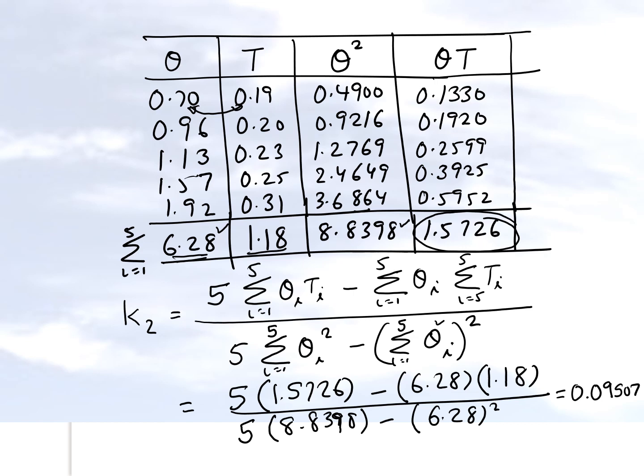Let's go and see what we get for the value of k1. So k1 is nothing but T bar minus k2 theta bar. So T bar will be the average value of all the T values minus k2, which we just found out, and theta bar, which is the average value of the theta values, which is 6.28 divided by 5. So once we calculate this value we get 0.1166.